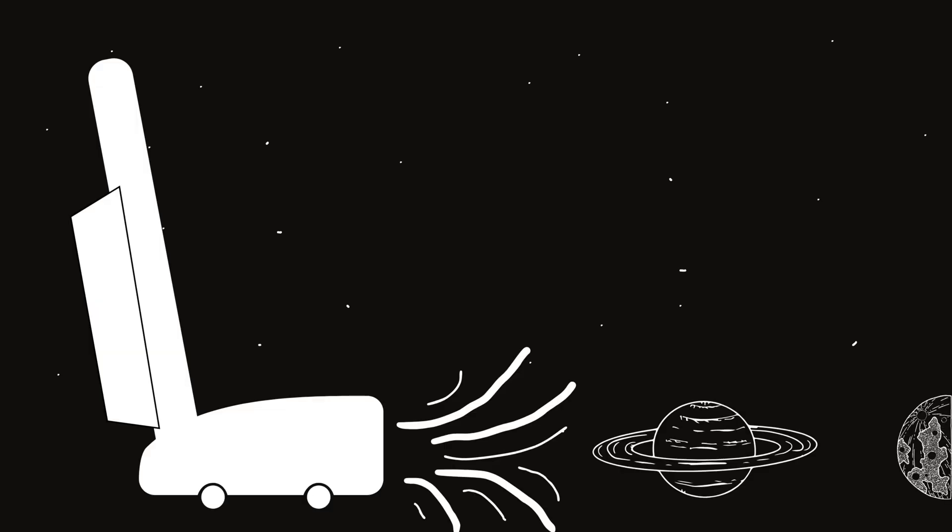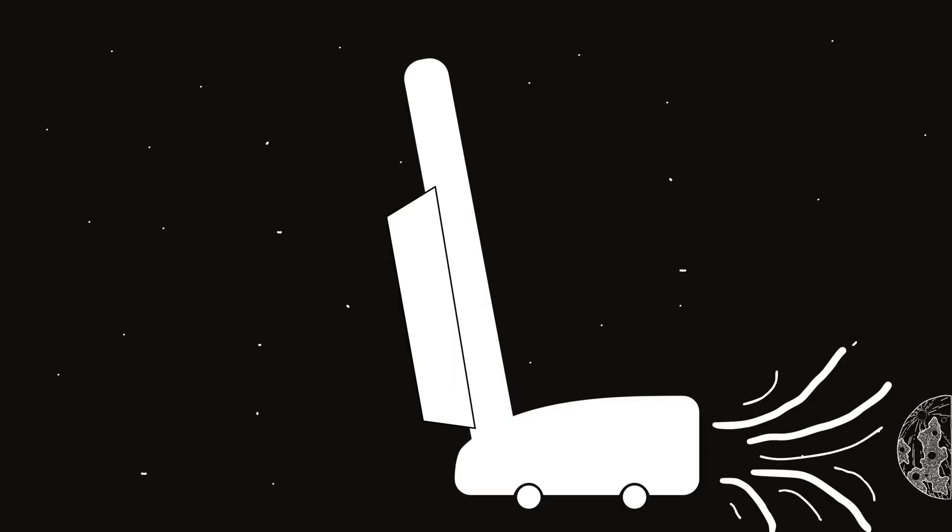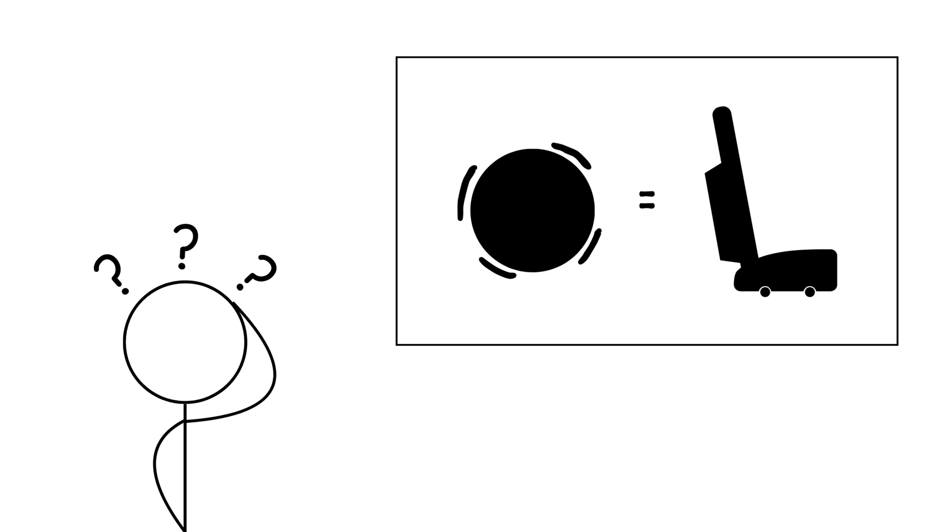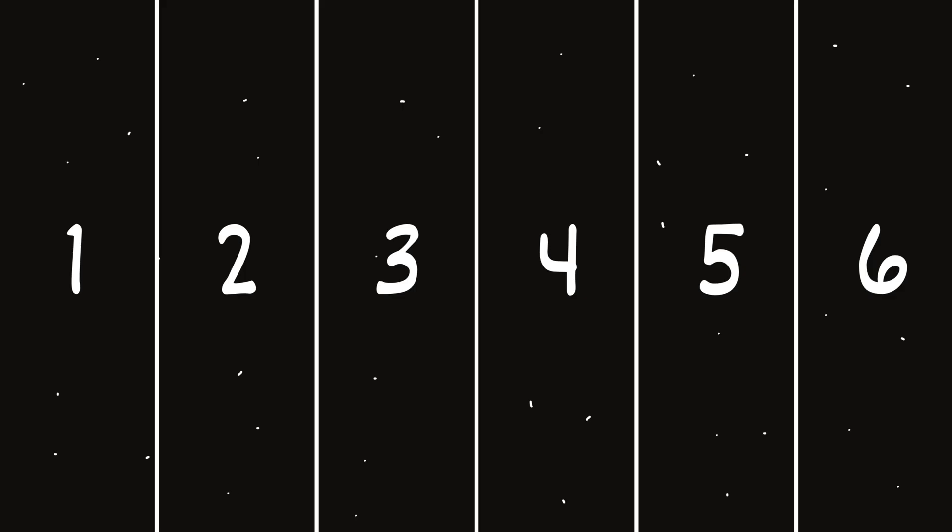People picture a black hole as this giant cosmic vacuum cleaner, just sucking up everything in its path. That's not wrong, but it's not the whole story either. There are different kinds of black holes, some small, some massive, some that might not even exist yet, and each type is terrifying in its own way. Let's go through them one by one.